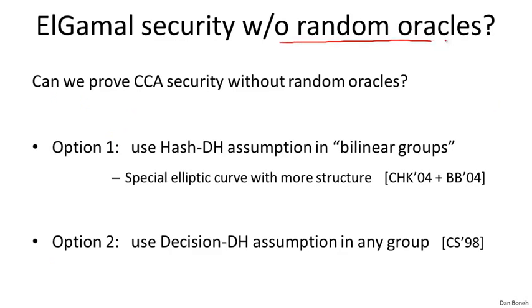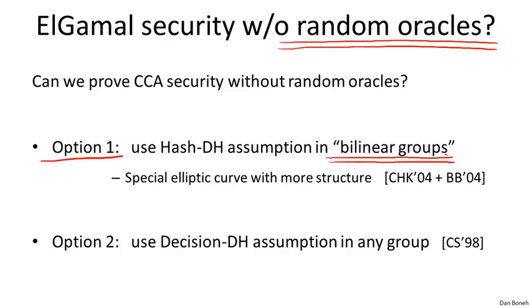The next question is whether we can get rid of the assumption that the hash function is an ideal hash function — namely a random oracle. This is a huge and very active area of research. There are basically two families of constructions. The first uses these special bilinear groups: the extra structure of bilinear groups allows us to build very efficient chosen ciphertext secure systems without random oracles. I point to a number of papers at the end of the module that explain how to do that.